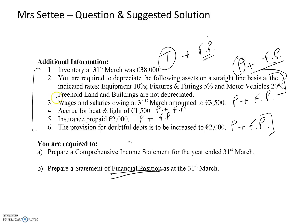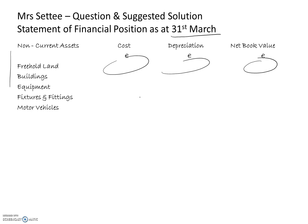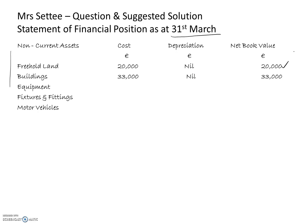Looking at the adjustments in the notes, freehold land and buildings are not depreciated, so the depreciation on those two non-current assets will be nil. Freehold land: original cost 20,000, depreciation nil, net book value 20,000. Likewise with the buildings: original cost 35,000 — actually 33,000 — depreciation nil, so the net book value is 33,000.